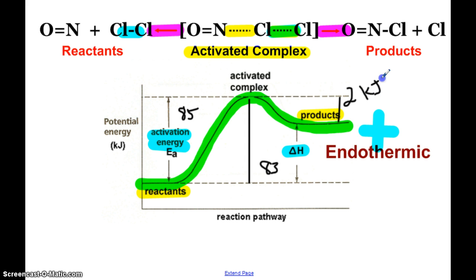We can also look at this diagram backwards. If I had my products and wanted to go back to the reactants, that's a very small activation energy. The reverse activation energy would be 2 kilojoules, much smaller than the forward activation energy. That's typical of an endothermic reaction - the reverse would have a smaller activation energy than the forward.